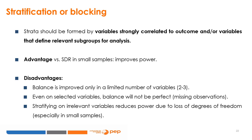The choice of variables for stratification is not trivial. Strata should be formed by a small number of variables strongly correlated to the outcome and/or variables that define relevant subgroups for analysis. The main advantage of stratification over a single random draw in small samples is that it improves power — for a given level of power, stratification requires a smaller sample size. However, balance can only be improved for a limited number of variables, and stratifying on irrelevant variables reduces power due to loss of degrees of freedom, especially in small samples.